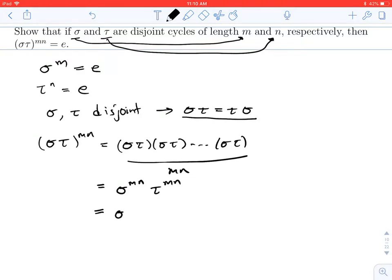Now, raising sigma to the mn means I'm going to write down sigma times sigma times sigma mn times. That's the same thing as writing sigma to the m, n times in a row. And tau to the mn, that's the same thing as writing tau to the n, m times in a row.